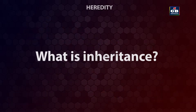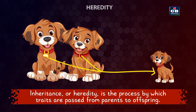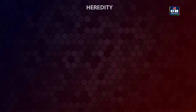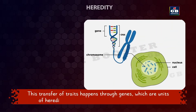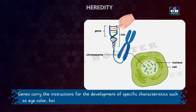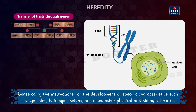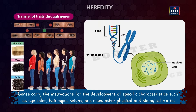What is inheritance? Inheritance or heredity is the process by which the traits are passed from parents to offsprings. This transfer of traits happens through genes, which are the units of heredity or the DNA of all living organisms. Genes carry the instructions for the development of specific characteristics such as eye color, hair type, height and many other physical and biological traits.